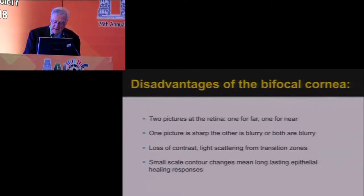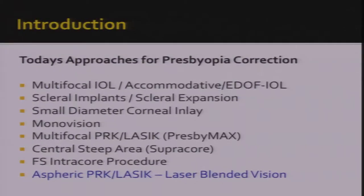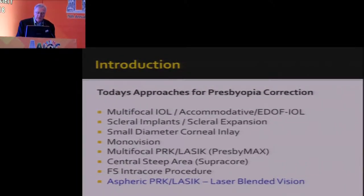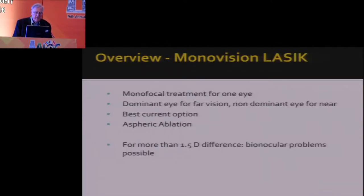You also have a long-lasting epithelial healing response. Today, approaches for presbyopia correction include multifocal IOL, EDOF, the accommodative IOL, scleral implants, small diameter corneal inlay like Kamra or Presbi Lens, monovision, multifocal PRK LASIK like laser blended vision. The overview of monovision LASIK: monofocal treatment for one eye — dominant eye for far vision, non-dominant eye for near vision — is the best current option at the moment, using an aspheric ablation. But for more than 1.5 diopter difference, you can have binocular problems.